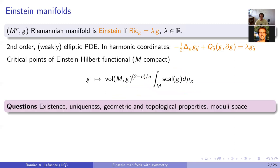The questions one is interested in when studying Einstein metrics are: given M, whether such a metric exists, whether there are one or many of them, what are their geometric properties, and whether they impose any topological restrictions on the manifold. Finally, we want to understand the space of Einstein metrics on a fixed manifold up to isometry — the moduli space.